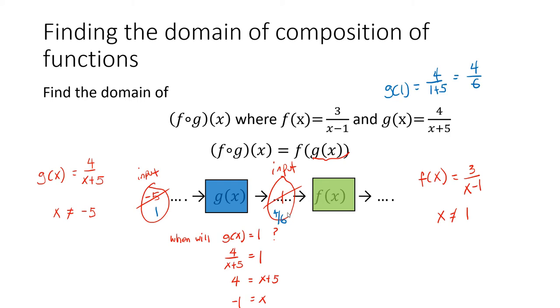We can find that by setting the function g(x) equals to 1. So here, x + 5 is in the denominator. So to cancel that out, multiply that amount left and right side, so that we can bring it up to the top. Then these two cancel out, giving us 4 = x + 5. Move the 5 over by subtracting 5. So final result is -1.